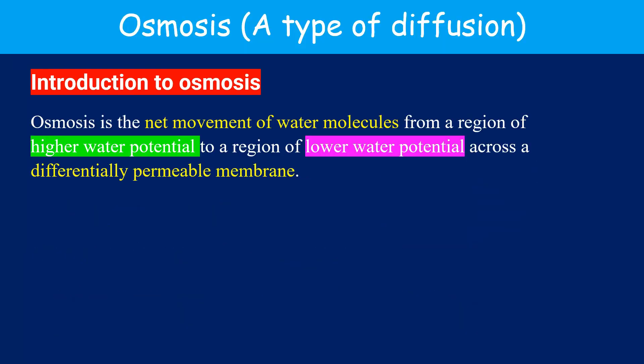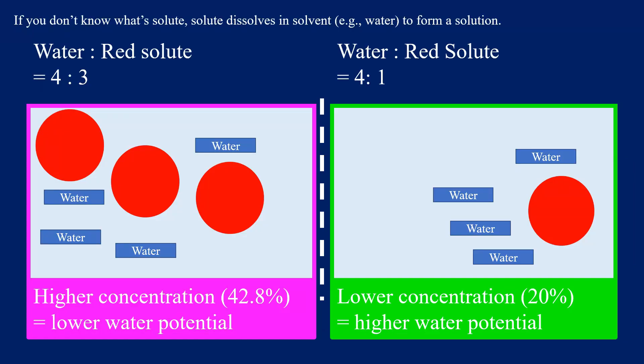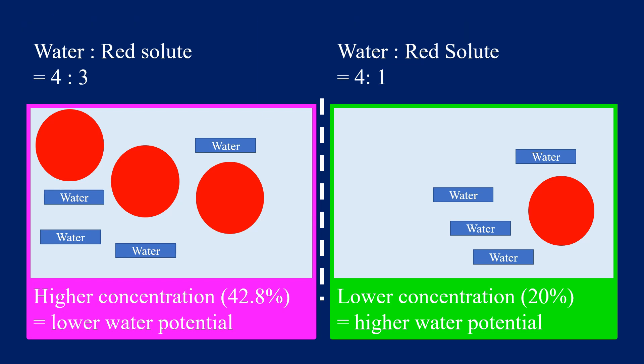Osmosis is the net movement of water molecules from a region of higher water potential to a region of lower water potential across a differentially permeable membrane. Water potential refers to the tendency of water molecules to move. The higher the amount of solute particles in the solution, the higher the concentration of the solution, and the lower the tendency of water molecules to move — this is described as having low water potential. Let's have a look at the following diagrams. In the pink box, the concentration of solute is higher than that in the green box.